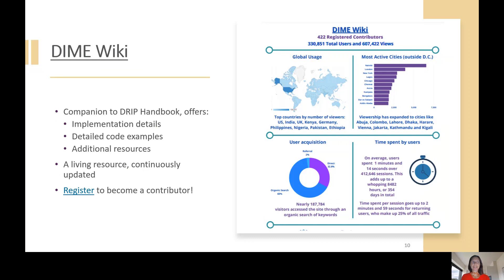Readers will find frequent references to the DIME Wiki throughout the handbook. The DIME Wiki and the handbook are meant to be complementary resources. The book provides the narrative structure and workflow. The Wiki offers specific implementation details, detailed code examples, and a more exhaustive set of references for each topic. DIME launched the Wiki in 2018, and over the past three years we've seen rapid expansion in usage, with a substantial portion of the user base in Sub-Saharan Africa and South Asia. The interest in the Wiki was our first hint at the unmet demand for resources on research and data quality, and formed part of the motivation for developing this handbook.